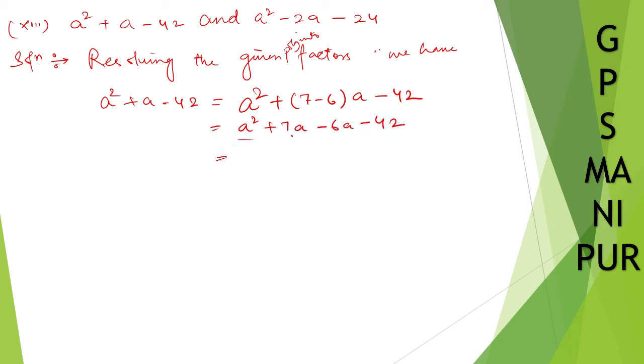Now from these two you can take a common. Take a common: a plus 7. And from the other two, a minus goes out, so a plus 7, a minus 6.